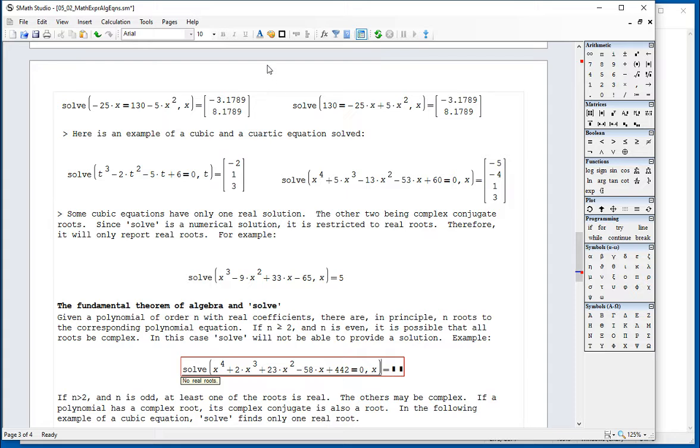And you can go ahead and change the range. Let's try a wider range, like minus 1,000 to 1,000. And still don't get any real roots, because they may be all complex roots.